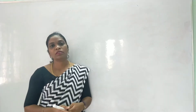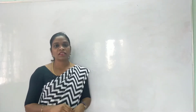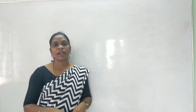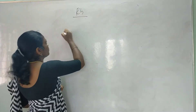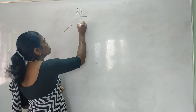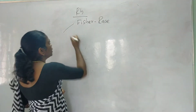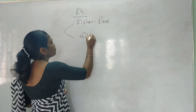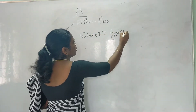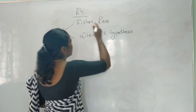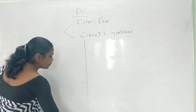Two hypotheses have been proposed to explain the existence or the presence or absence of D antigen especially. The first one is Fischer and Reiss hypothesis. The next one is Wiener's hypothesis. We will go through them one by one, starting with Fischer and Reiss hypothesis.